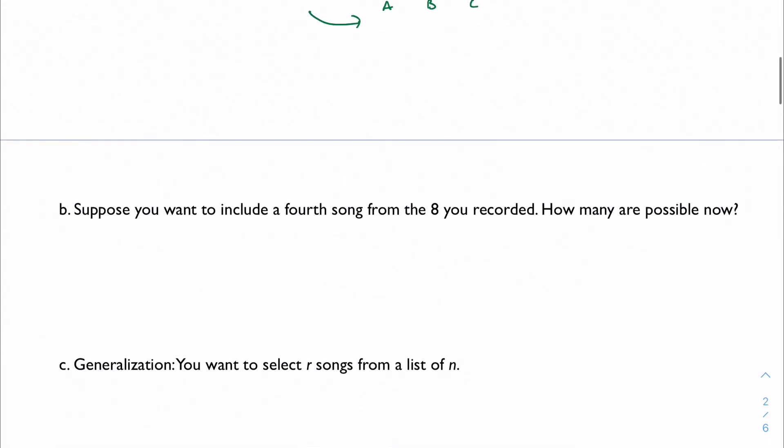Suppose I want to include a fourth song. We're with eight options still for the first track. And I have seven, and I have six, but now I have five songs left to include as my fourth song in the album. So eight times seven times six times five, and I get 1680. Okay, great.